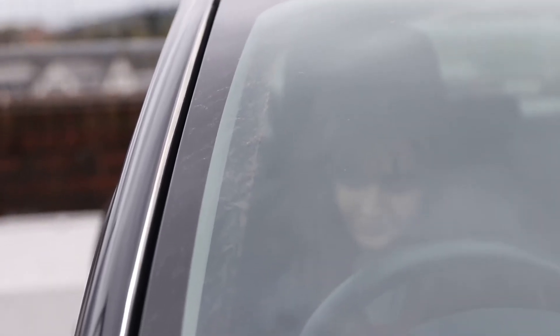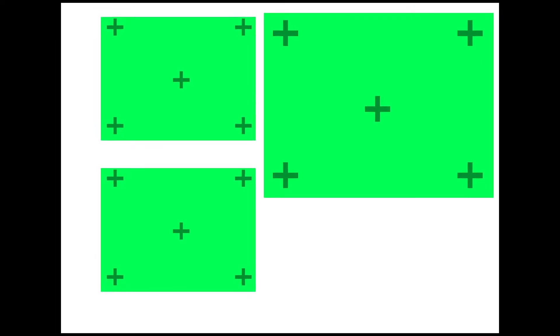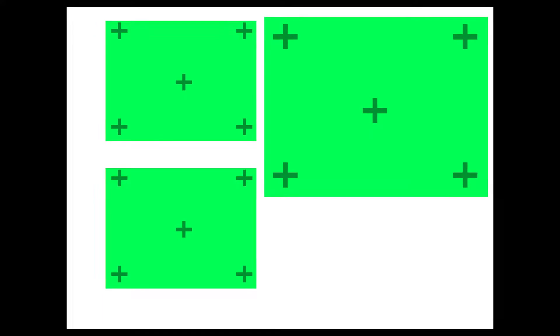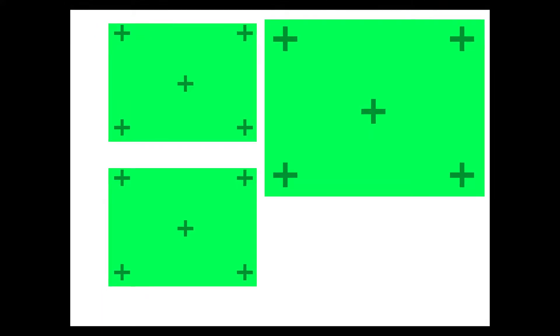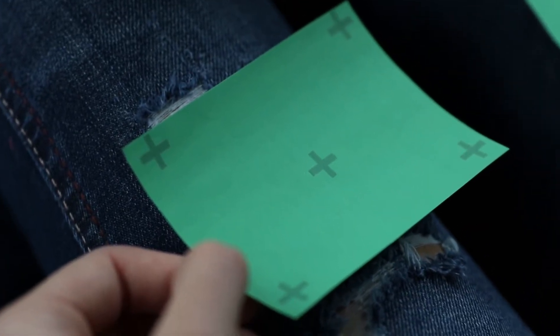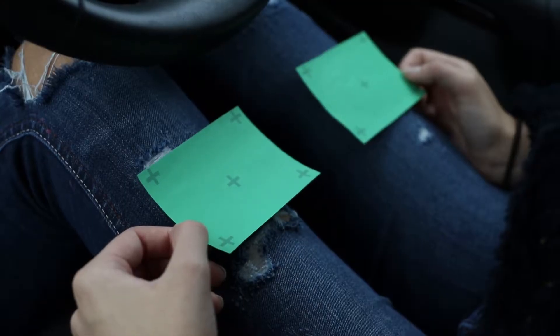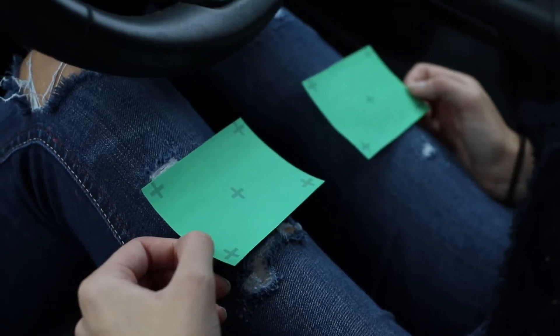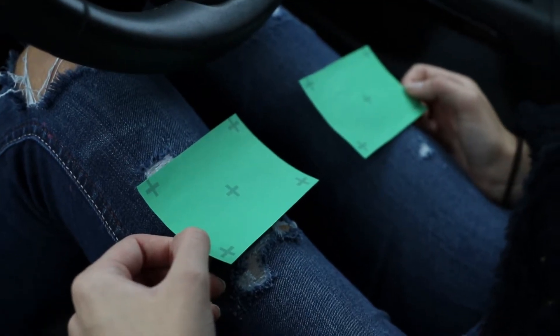This effect requires some planning on set during your production. Basically, what you need to do is print out some pieces of card or paper that are green and have markers on them in the corners — you can make them in Photoshop. I just designed mine quickly and printed out a few in different sizes so I could choose on set which size worked best.